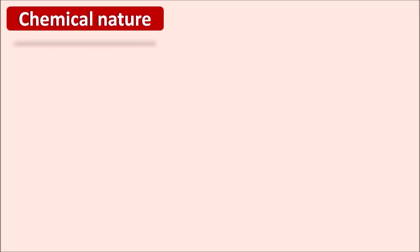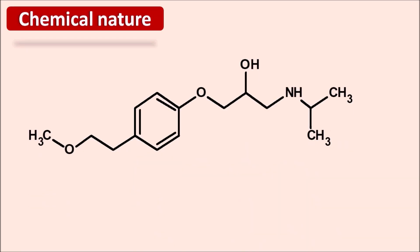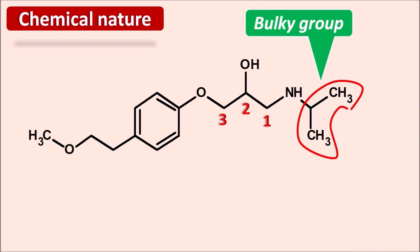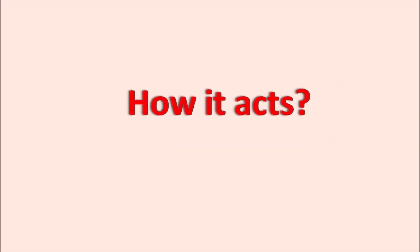Regarding the chemical nature of metoprolol: all beta blockers are aryloxypropanolamines. We can observe the propyl chain — positions one, two, three — attached with the amine as well as an -OH group at the second position. On the amine, there is a bulky chain; this bulky group is responsible for the increased beta selectivity, which is why metoprolol is a selective beta-1 blocker.